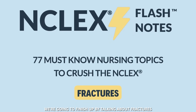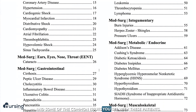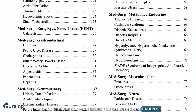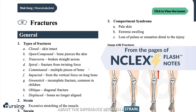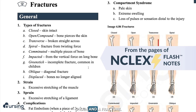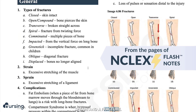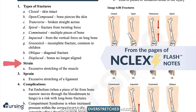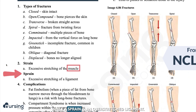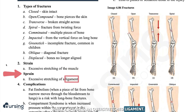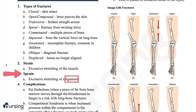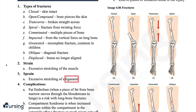We're going to finish up by talking about fractures and some of the common issues you see with these patients. First, we want to be clear about the difference between a strain, a sprain, and a fracture. A strain is an overstretched muscle, while a sprain is an overstretched ligament — that's really the only difference between the two. Neither one involves any damage to the bone.